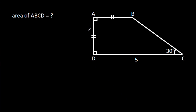In this video, we have been given that AB is equal to AD, and CD is 5, and angle BCD is 30 degrees. Then we have to find the area of ABCD.